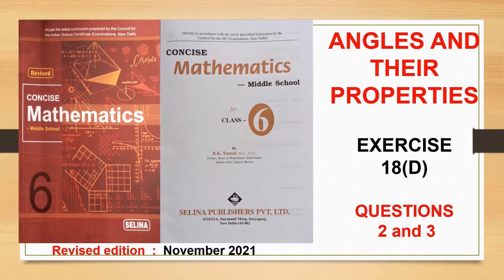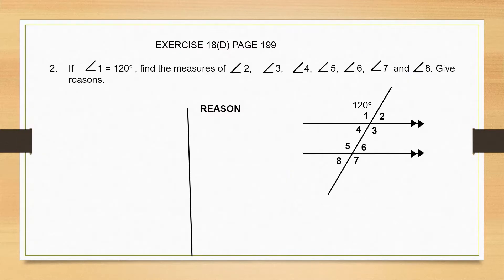Hello children, we are doing angles and their properties, exercise 18D, and we are going to work out questions 2 and 3. Question 2: if angle 1 equals 120 degrees, find the measures of angles 2, 3, 4, 5, 6, 7 and 8, and we need to give reasons. Okay, so let's start.